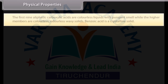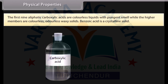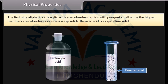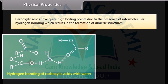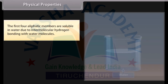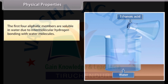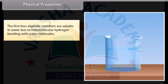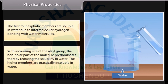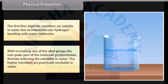Physical properties: the first nine aliphatic carboxylic acids are colourless liquids with pungent smell, while the higher members are colourless, odourless, waxy solids. Benzoic acid is a crystalline solid. Carboxylic acids have quite high boiling points due to the presence of intermolecular hydrogen bonding, which results in the formation of dimeric structures. The first four aliphatic members are soluble in water due to intermolecular hydrogen bonding with water molecules. With increasing size of the alkyl group, the non-polar part of the molecule predominates, reducing the solubility in water, and the higher members are practically insoluble in water.